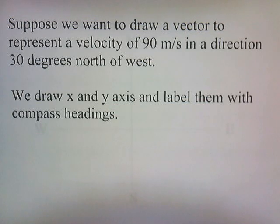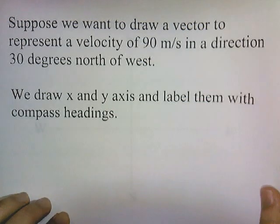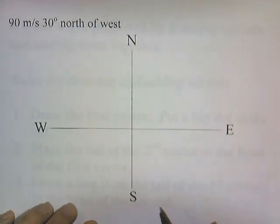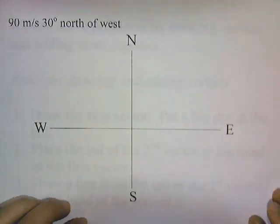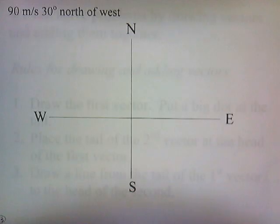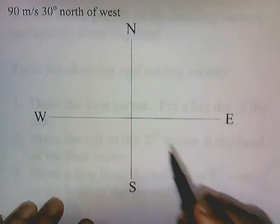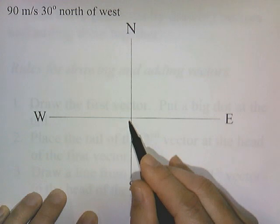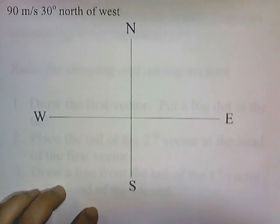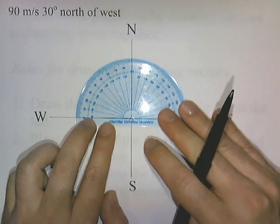Suppose we want to draw a vector to represent a velocity of 90 meters per second in a direction 30 degrees northwest. We start by drawing x and y axes and label them with compass headings. 30 degrees north of west can be read as 30 degrees above the west axis. We draw a line starting at the origin and have it point 30 degrees above the west axis, so you'll need a protractor to measure 30 degrees.